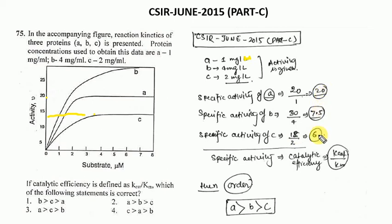Remember that catalytic efficiency has two ways. One is Kcat by KM, the other is specific activity: activity divided by amount of enzyme. So the order is A, B, C. Which option should be? The second option is correct.